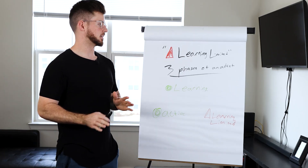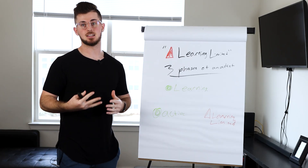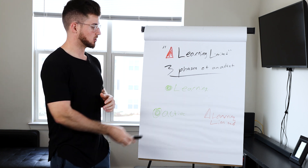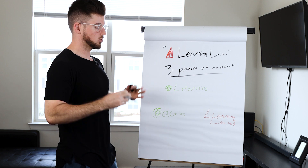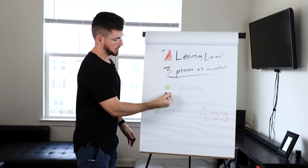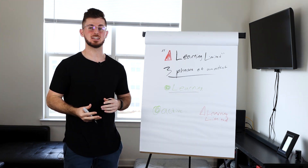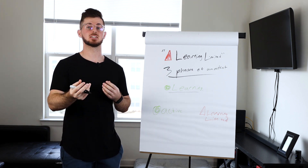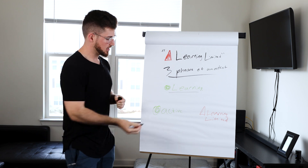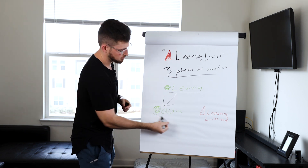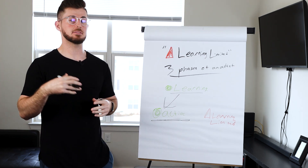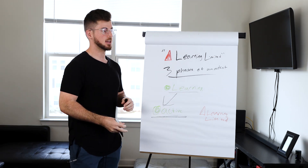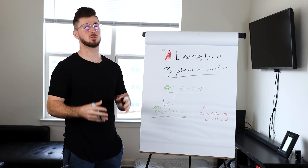There are three phases of an ad set. You launch it and initially it starts off in the learning phase right away — simple. After you launch it, it goes into the learning phase and over the next few days it'll take one of two paths. It'll either go to active, where you're getting somewhere around 50 conversion events within that time period.